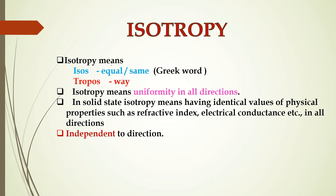Isotropy — the word comes from the Greek words: 'isos' meaning equal or same, and 'tropos' meaning way. So isotropy means uniformity in all directions.